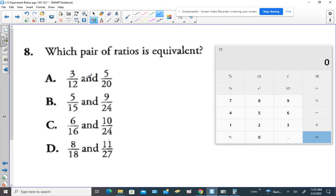So let's just take a look at choice A first. If we do 3 times 20, you should be able to do 3 times 2 in your head and just put the 0. That would be 60. And if we do 12 times 5, ask yourself, is that also 60? So if it is, then you found it.